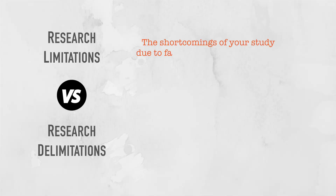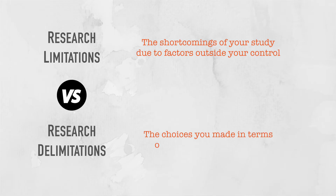So let's recap. Research limitations and research delimitations are related in that they both refer to limits within a study, but they are distinctly different. Limitations reflect the shortcomings of your study based on practical or theoretical constraints that you faced. Contrasted to that, delimitations reflect the choices that you made in terms of the focus and scope of your research aims and research questions. If you want to learn more about research aims and research questions, you can check out this video where we unpack those concepts in detail.